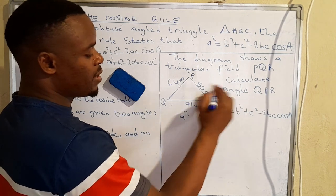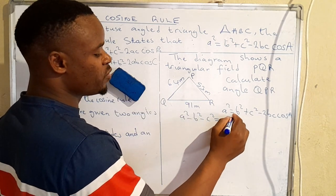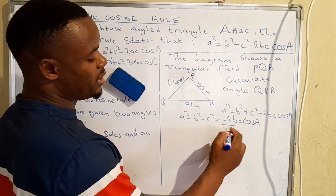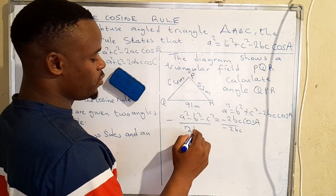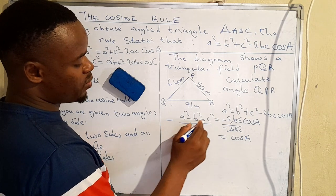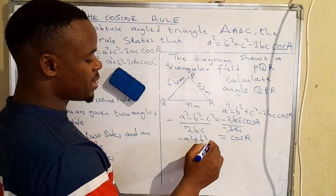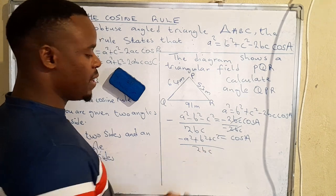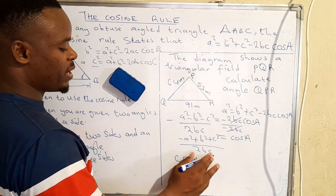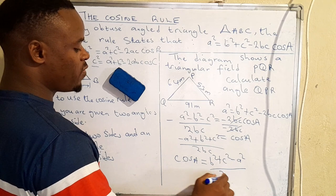So that becomes a squared minus b squared minus c squared equals negative 2bc cos A. Our interest is to find an angle, so we divide both sides by negative 2bc — those cancel — and we get cos A equals negative a squared, then negative times negative gives plus b squared, negative times negative gives plus c squared, all over 2bc. We can rewrite that as cos A equals b squared plus c squared minus a squared over 2bc.